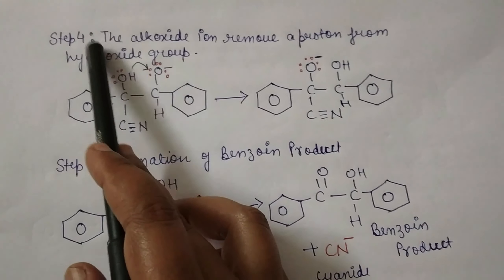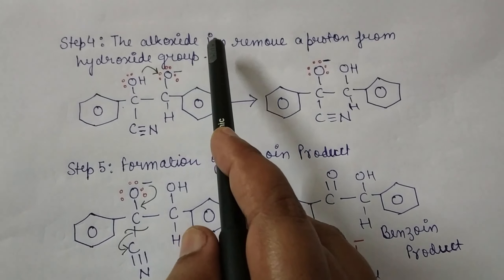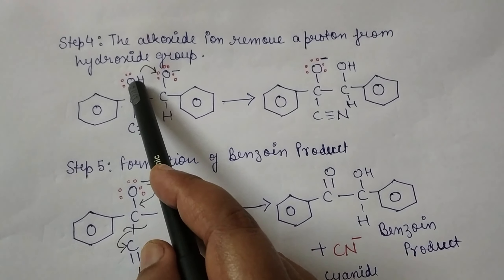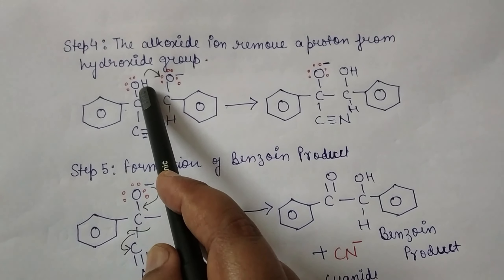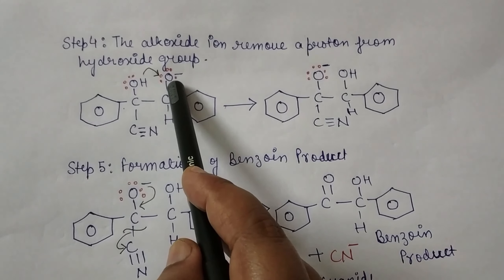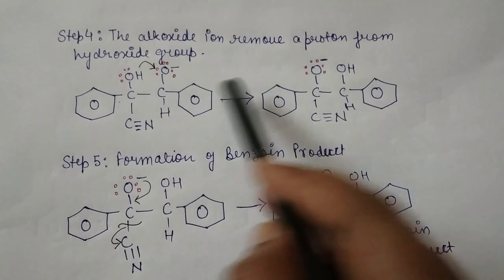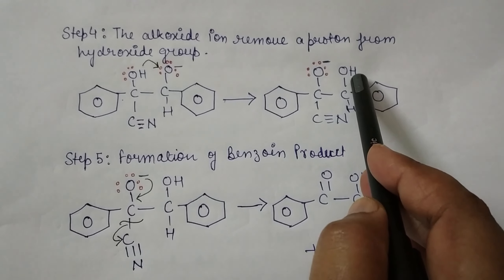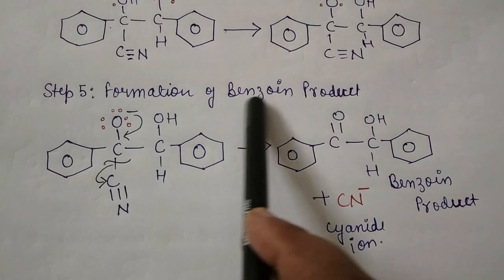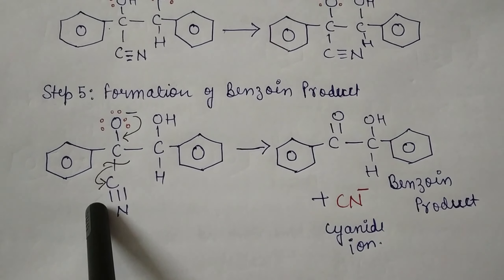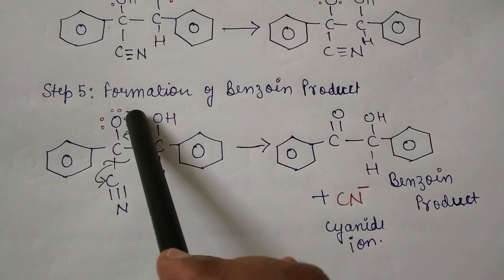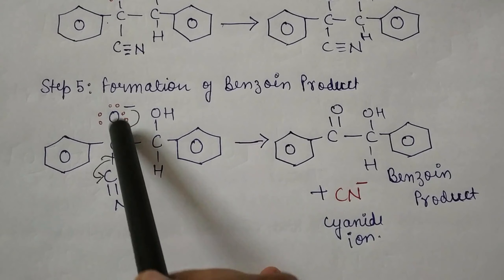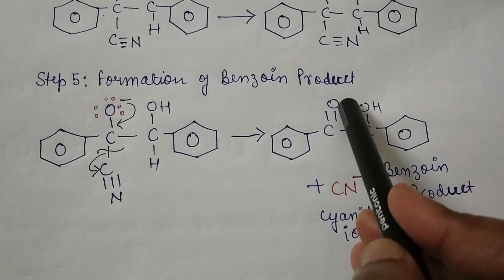In step 3, the carbanion attacks a second molecule of benzaldehyde. The carbon with negative charge forms a bond with the carbonyl carbon of benzaldehyde, and the double bond between carbon and oxygen breaks, causing oxygen to acquire a negative charge. In step 4, the alkoxide ion formed in step 3 removes a proton from the hydroxyl group, so the proton reshuffles from the OH group onto the oxygen with negative charge.